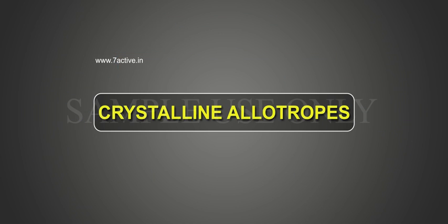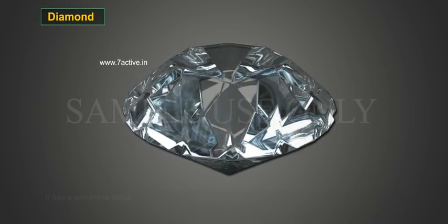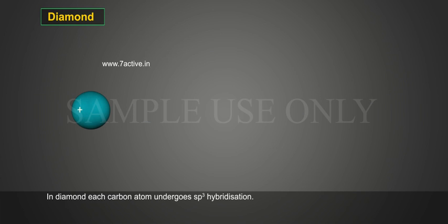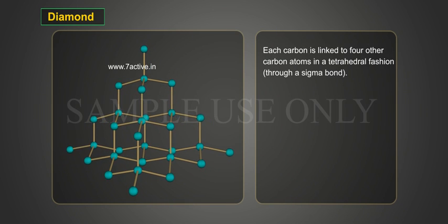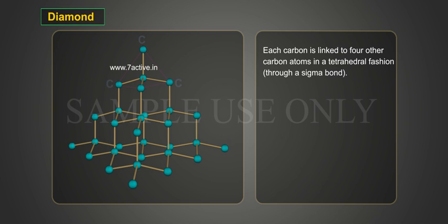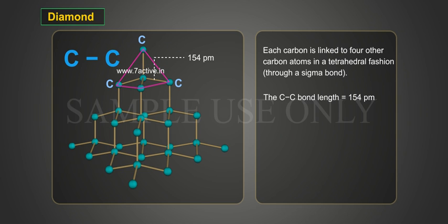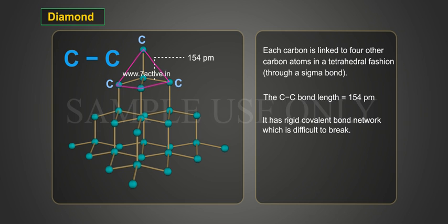Let us discuss crystalline allotropes. Diamond has a crystalline lattice. In diamond, each carbon atom undergoes sp3 hybridization. Each carbon is linked to four other carbon atoms in a tetrahedral fashion through a sigma bond. The carbon-carbon bond length is equal to 154 pm.